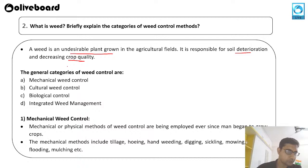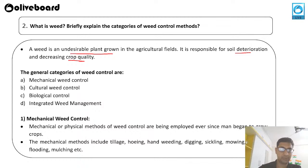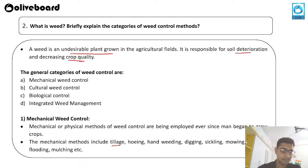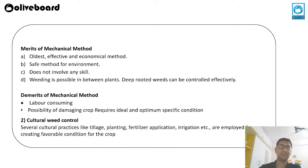There are generally four methods for weed control: mechanical weed control, cultural weed control, biological weed control, and integrated weed management. Mechanical or physical methods have been employed since the beginning of agriculture — the earliest method. These include tillage, hoeing, hand weeding, digging, sickling, mowing, burning, flooding, or mulching.